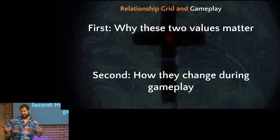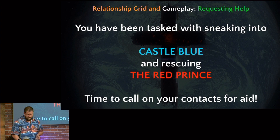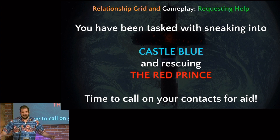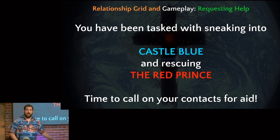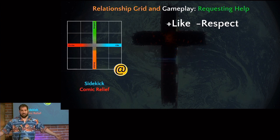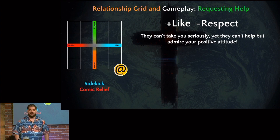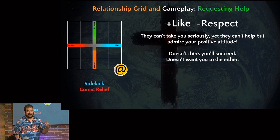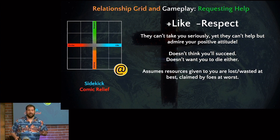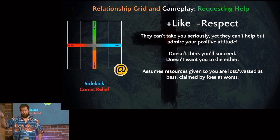Why do these values matter, and how do they change behavior? Here's an example — you have a mission: sneak into Castle Blue and rescue the Red Prince. You call on your contacts for aid. Start with somebody who likes you but doesn't respect you: they don't want you to die, they respect your positive attitude, but they know you're not going to win. Ask for gold? Sure. Ask for a plus-one assault rifle? They'll think it's just going to end up in some enemy's inventory — not worth it.